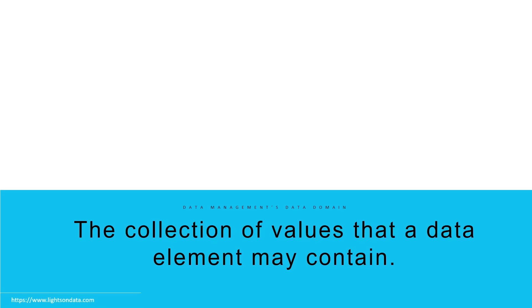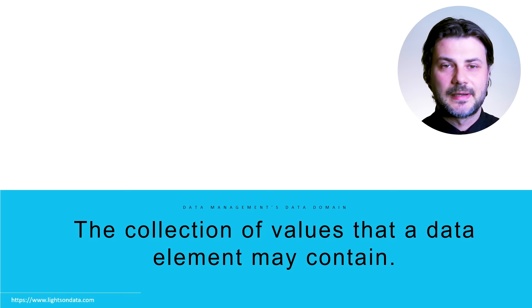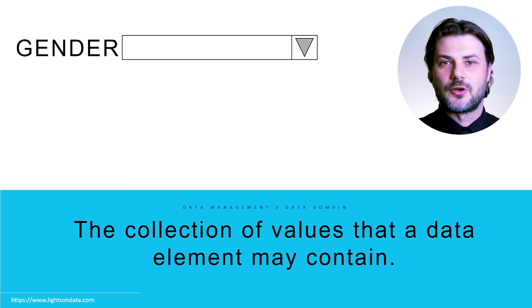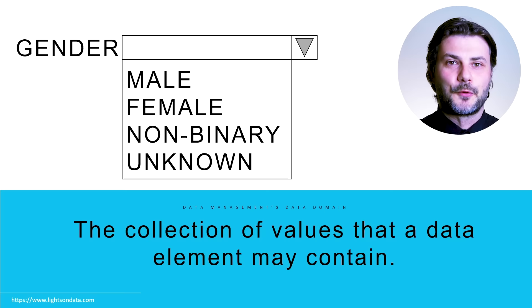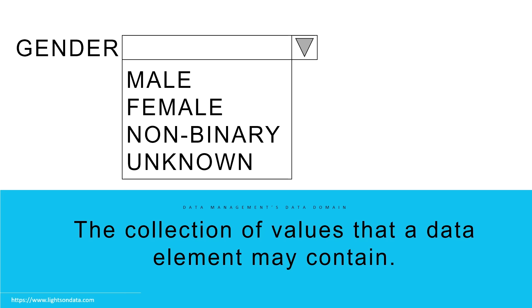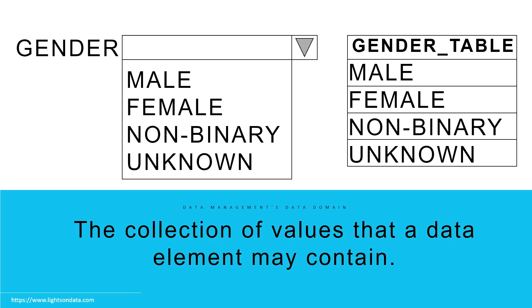Let's briefly look at the data domain from the data management point of view. The data domain represents the collection of values that a data element may contain. Let's take an example — a dropdown field in a web form or document. Take the example of gender: when we click on that dropdown, we might get options such as male, female, non-binary, or unknown. When we record this in a table in a database, the value assigned to gender can only be one of these four values. So we say that the data domain for the gender column is male, female, non-binary, or unknown.